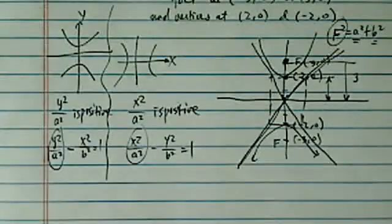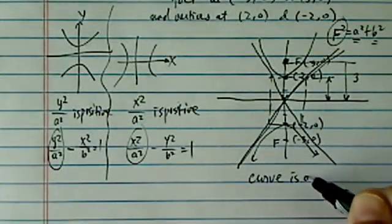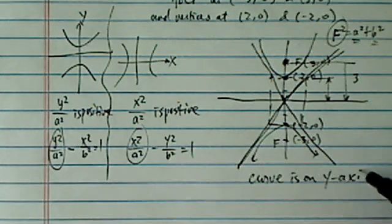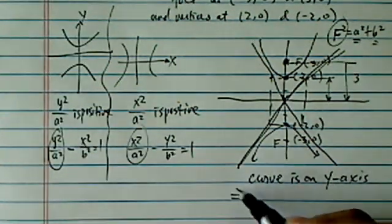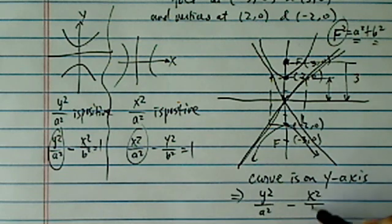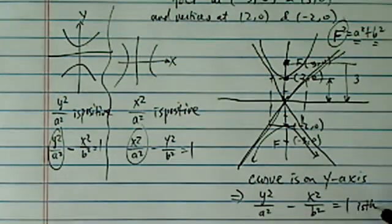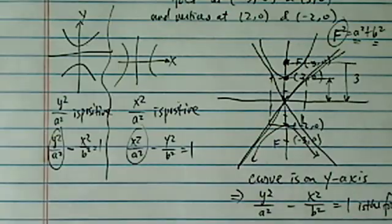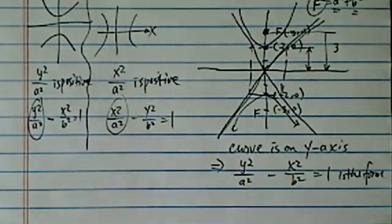So here's our curve. Obviously, the curve, let's write it down, curve is on Y axis. So from earlier discussion, so we know that Y squared over A squared minus X squared over B squared equal to 1 is the form.